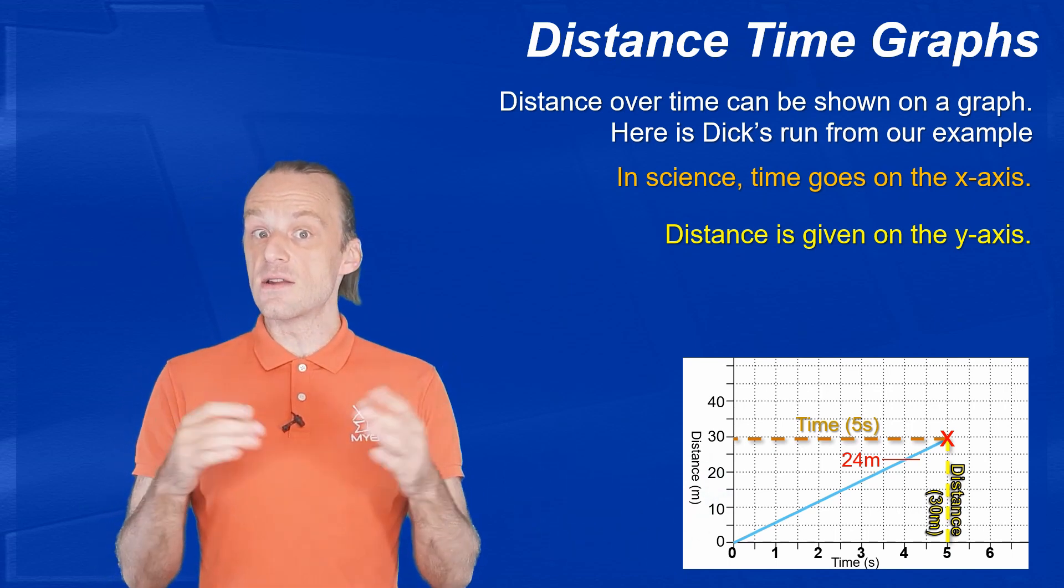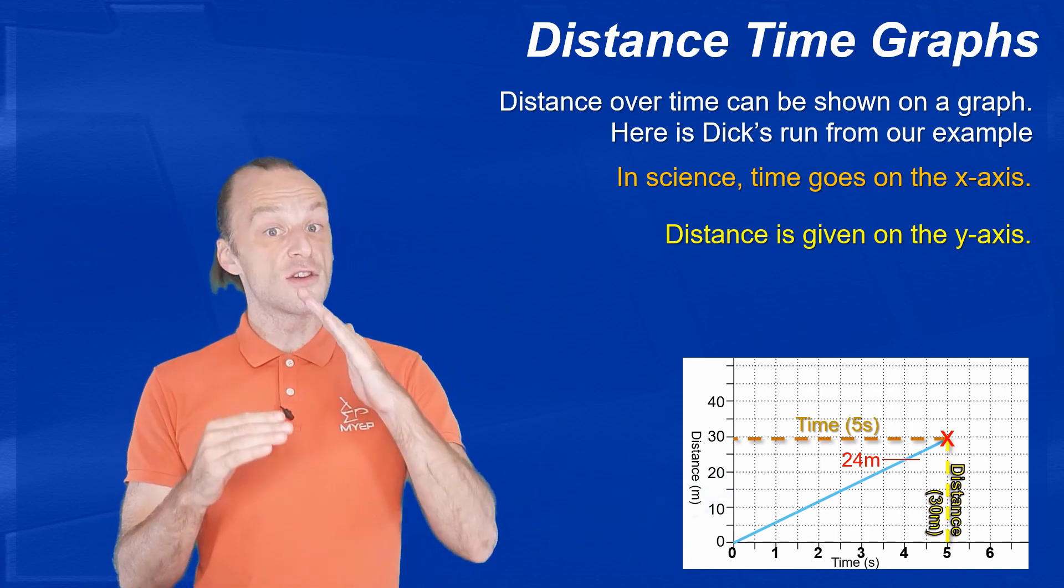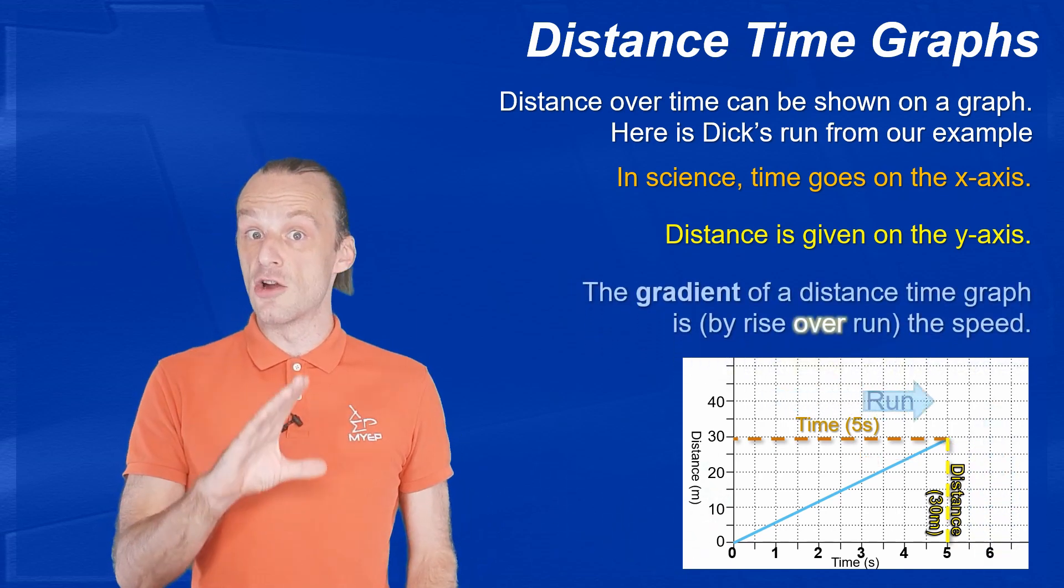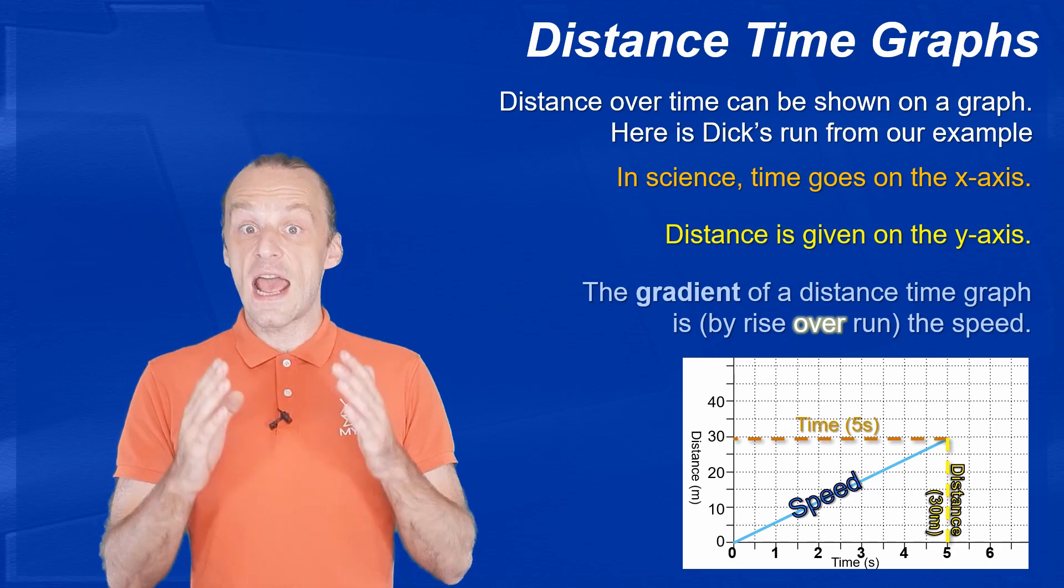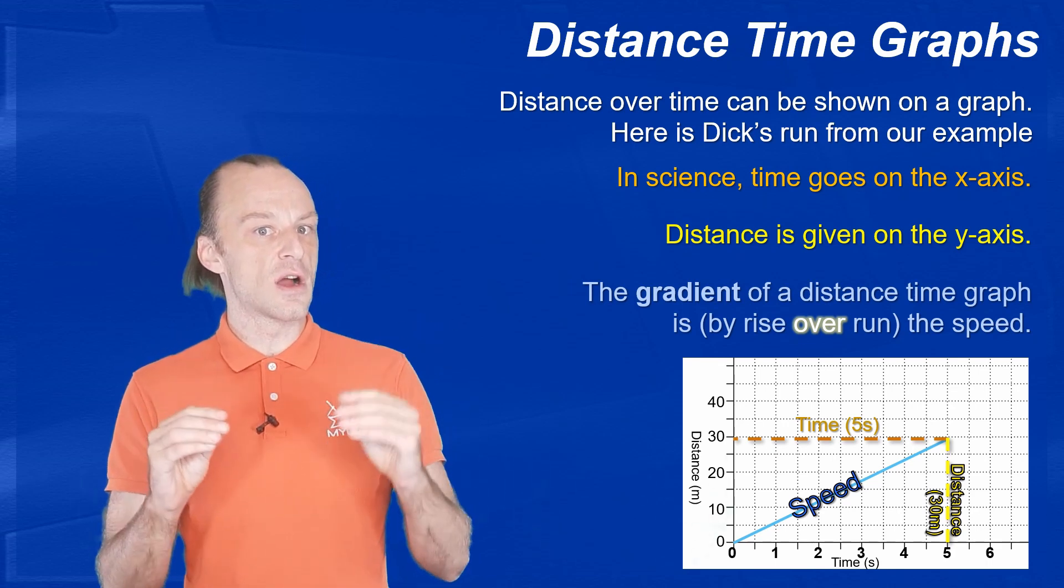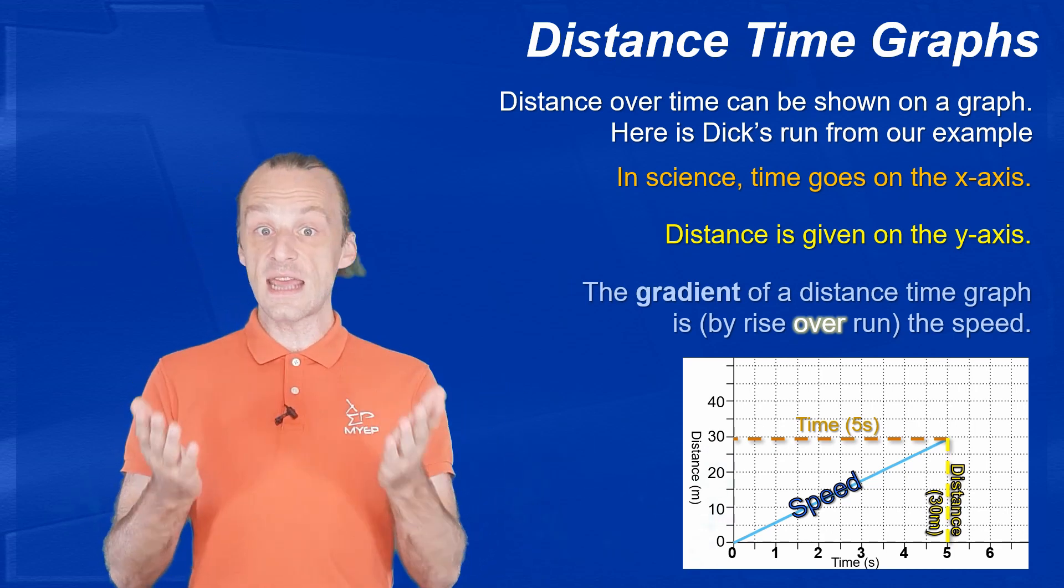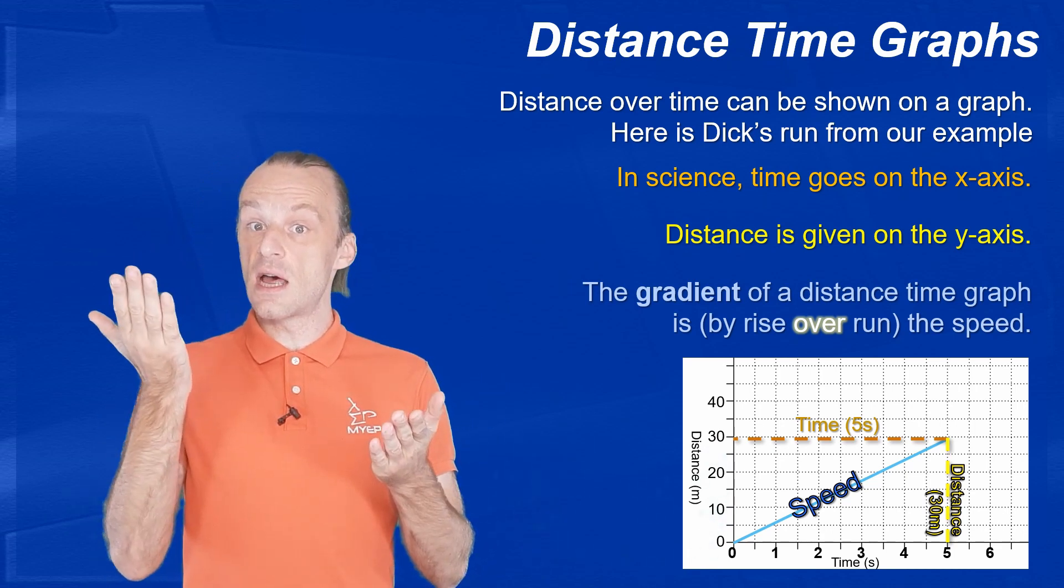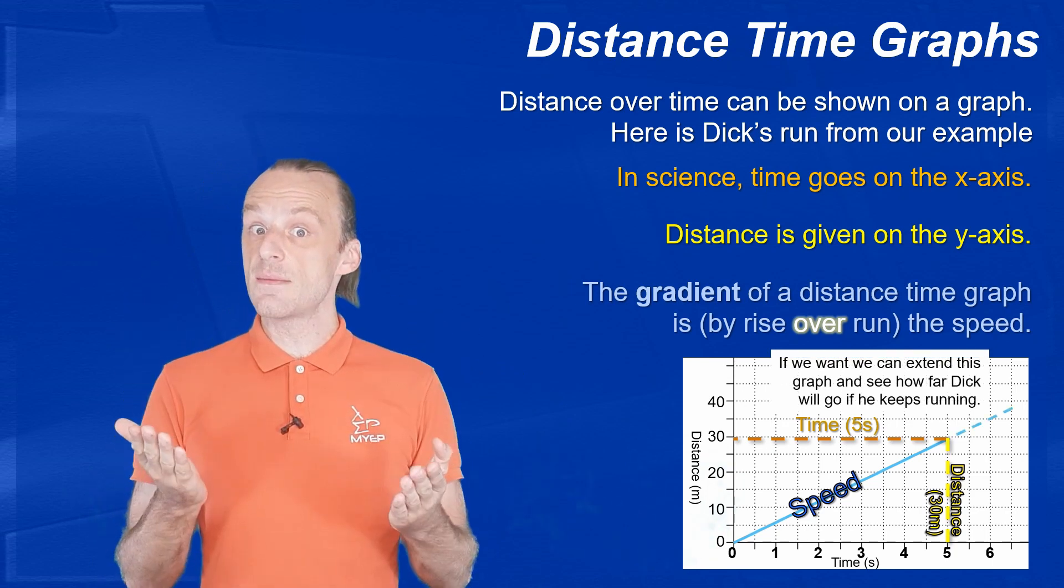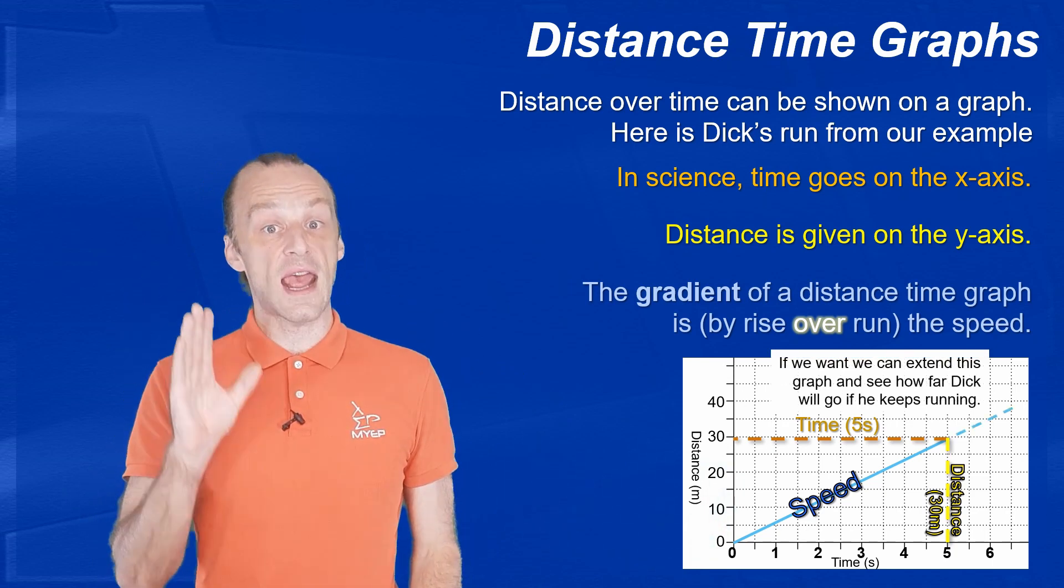The speed on this graph is shown by the gradient of the line, which we calculate by rise over run. In other words, how much the graph rises up divided by how much the graph runs along. And again, that is 30 meters up divided by 5 seconds along, which gives us the same answer of 6 meters every second.